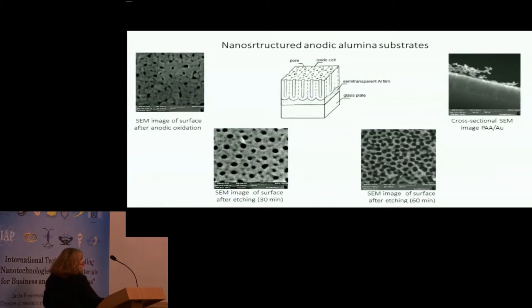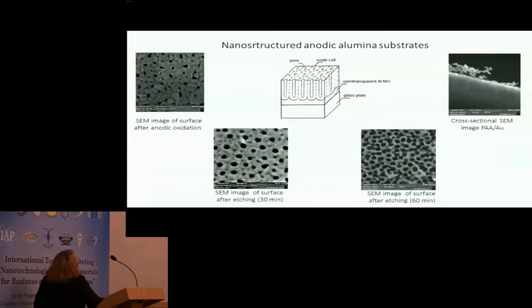Most investigation devoted to porous anodic alumina throughout the world concerns porous oxide on bulk aluminum. Our investigation is concerned with formation of thin film structures — porous anodic aluminum on a semi-transparent aluminum film of about 15 nanometers — deposited on glass plate, because our sensors are optical sensors on reflected light.